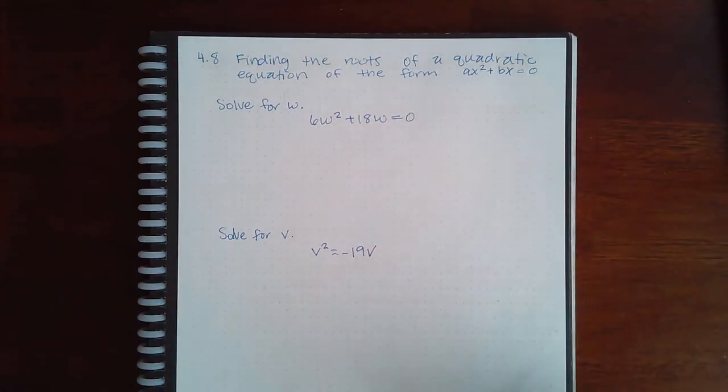Here we have 4.8, finding the roots of a quadratic equation of the form ax squared plus bx equals zero. In order to solve a polynomial or quadratic equal to zero, we have to have it in factored form. Since this problem is not in factored form, we have to use our factoring skills to put it in factored form.